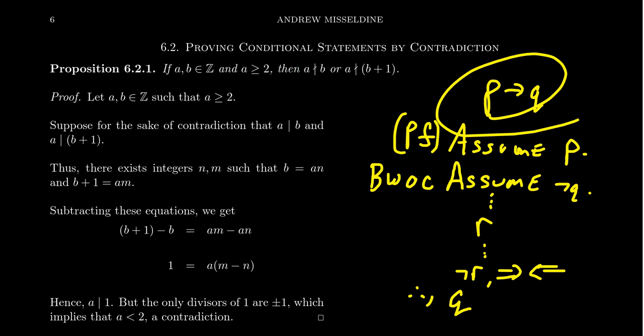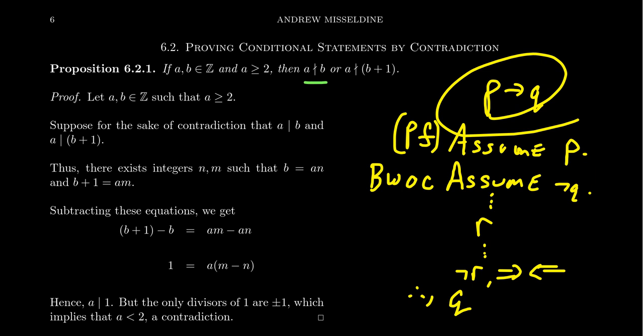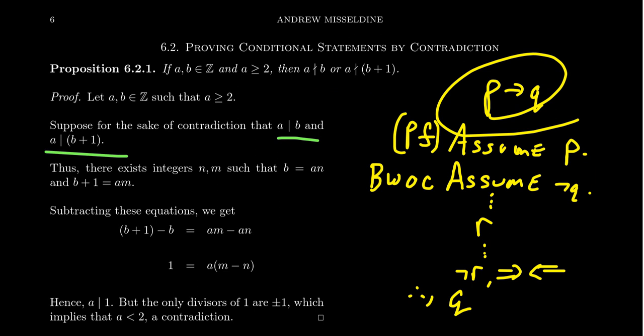Because we're trying to prove a negation with an or-statement, proof by contradiction is helpful. Suppose for the sake of contradiction that A divides B and A divides B+1. Applying De Morgan's laws, negating the or-statement gives an and-statement, and negating 'A does not divide B' gives 'A divides B'.